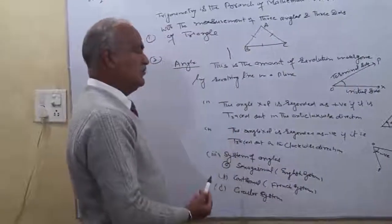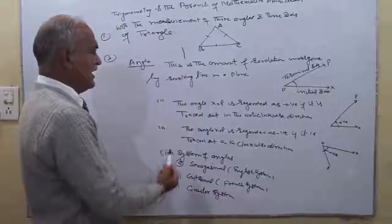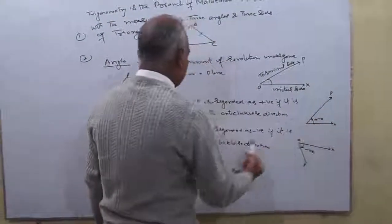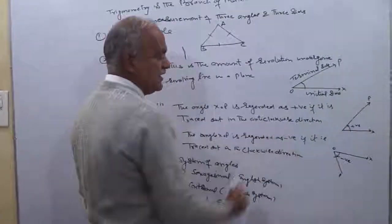There are two types. First is positive angle and second is negative angle. The angle XOP is regarded as positive angle if it rotates in the anti-clockwise direction.